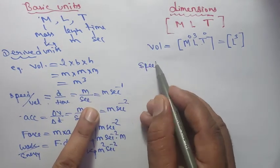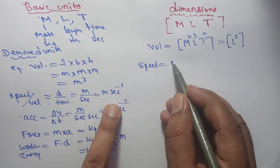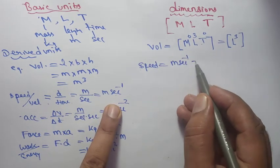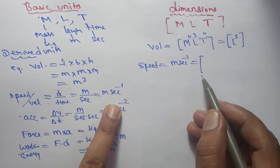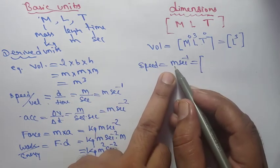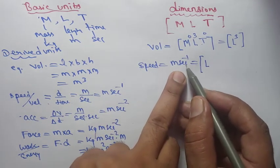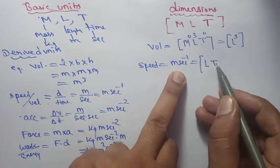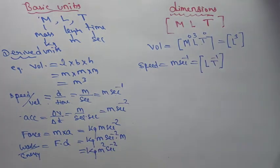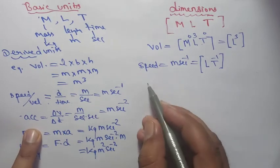Now dimension of speed: speed = m s⁻¹. Meter means length, second means time to the power minus one. So dimension of speed = [L T⁻¹]. Now acceleration.